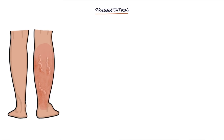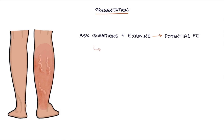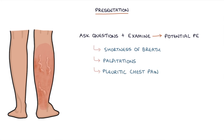If a patient is presenting with symptoms of a DVT, ask questions and examine with a suspicion of a potential pulmonary embolism as well. It's worth asking about shortness of breath, palpitations, and pleuritic chest pain.